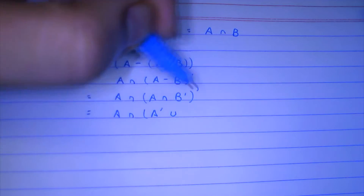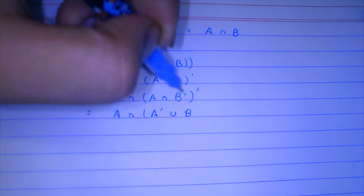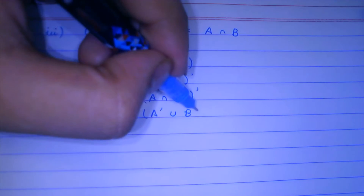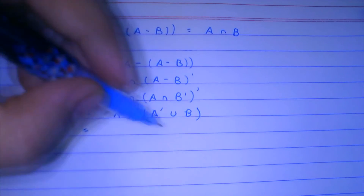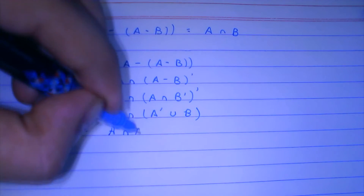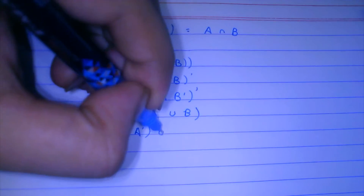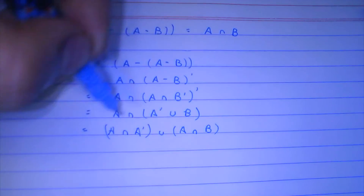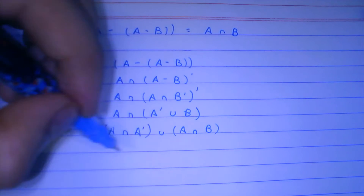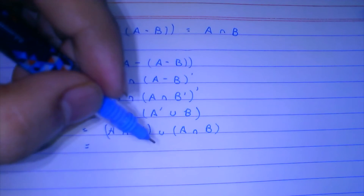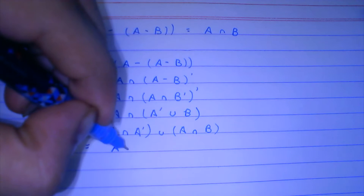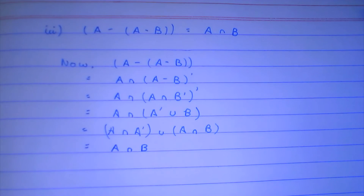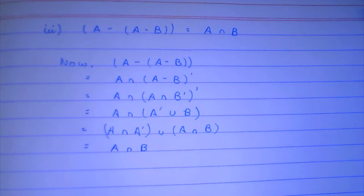Now we apply De Morgan's law here. This whole complement means A's complement union B complement's complement, which is B. So using the distributive property: A intersection (A complement union B) gives us (A intersection A complement) union (A intersection B). Since A and A complement have nothing in common, that term is phi, and we are left with A intersection B. So we have proved our third identity.